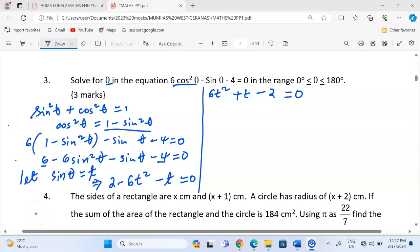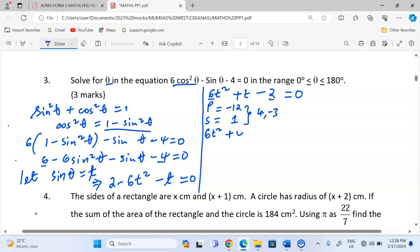So this can now be solved quadratically such that we need a product of -12, that is a times c, and a sum of positive 1. Now what we're going to have here is 4 and -3. Those are the factors which when multiplied give us -12 and when added give us positive 1. So we're going to have 6t² + 4t - 3t - 2 = 0.